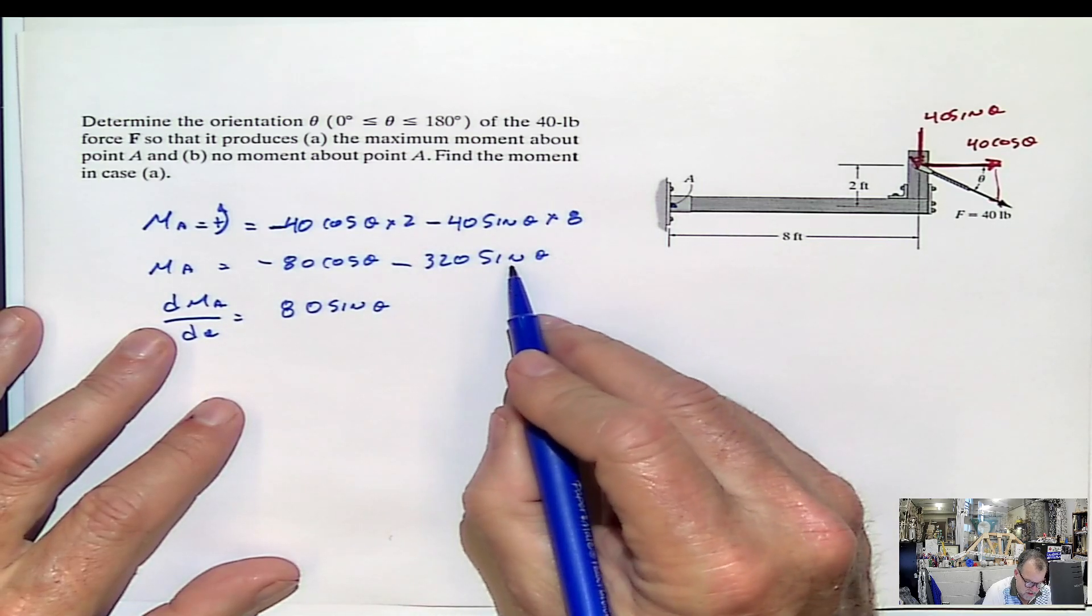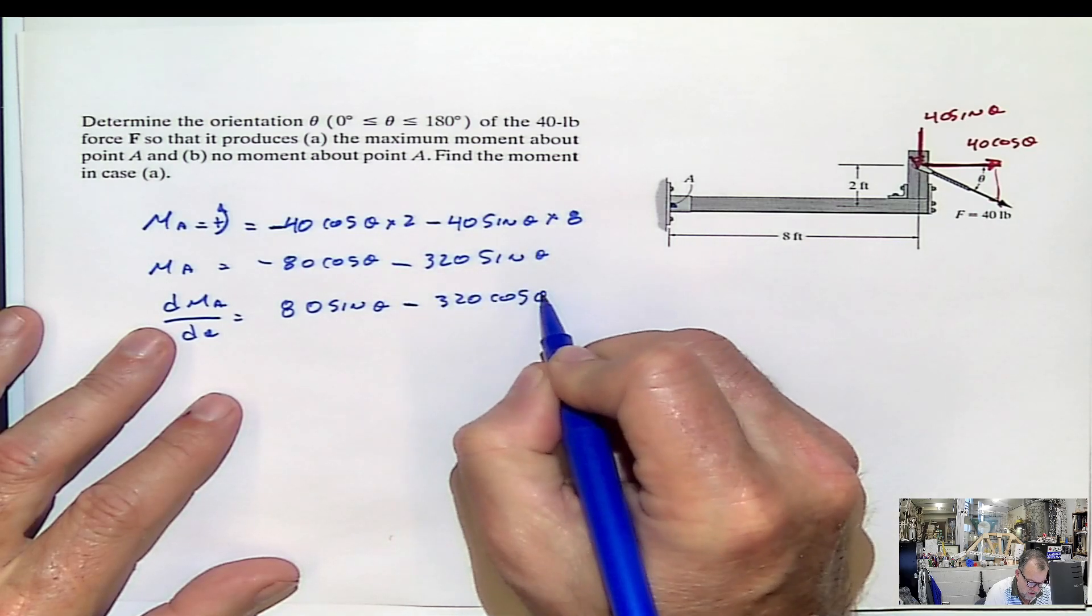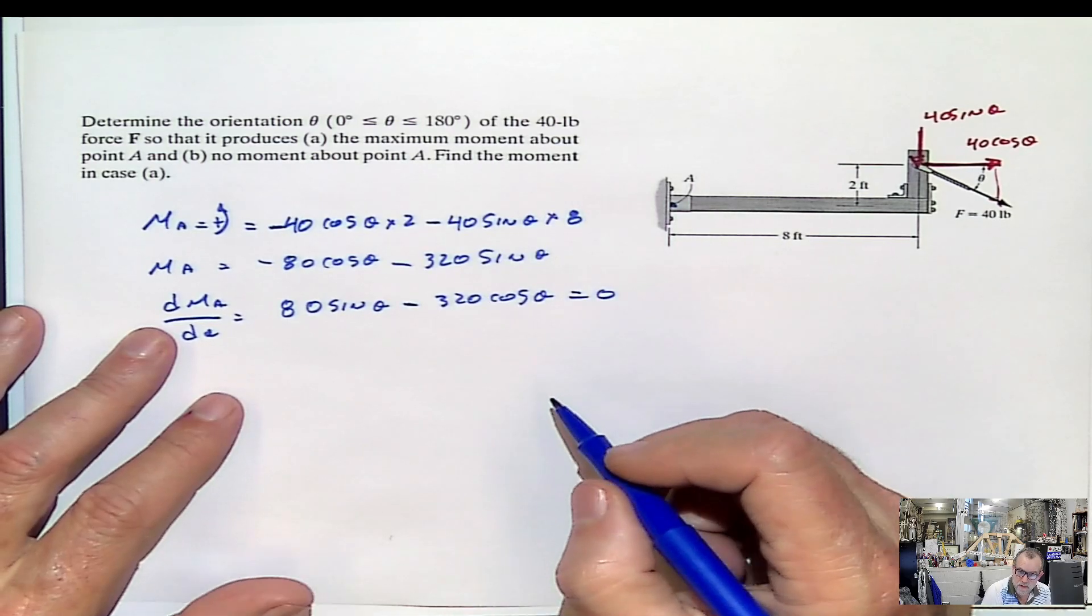And derivative of the sine is cosine. So that would be minus 320 cosine of the angle. That has to be 0 for producing maximum moment.